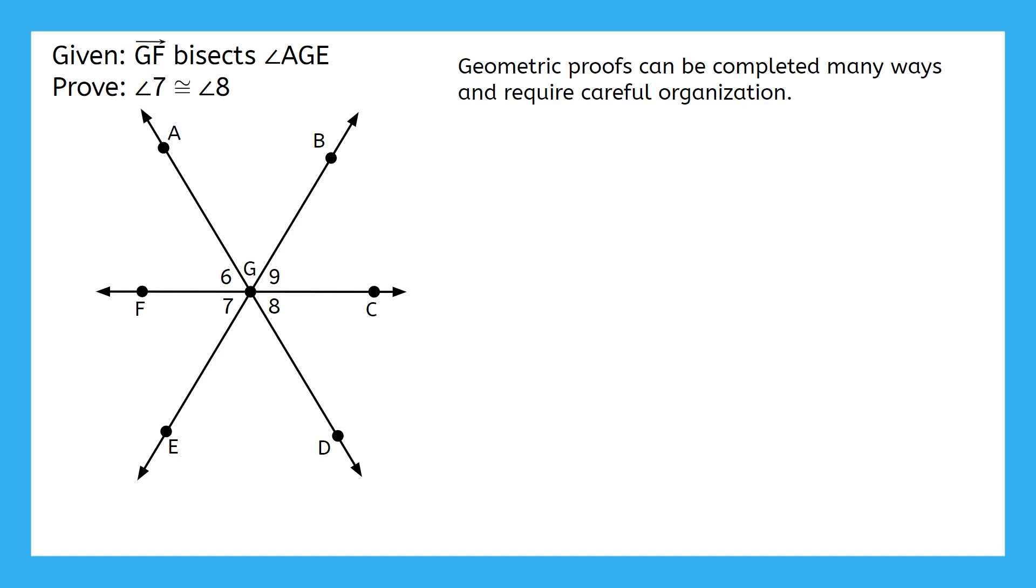The first way to help organize yourself is to use the picture. We can mark any congruences or relationships that we know from the given information. For example, if Ray GF bisects angle AGE, that means that angle 7 is congruent to angle 6. The next thing you can do is make a flowchart proof first.